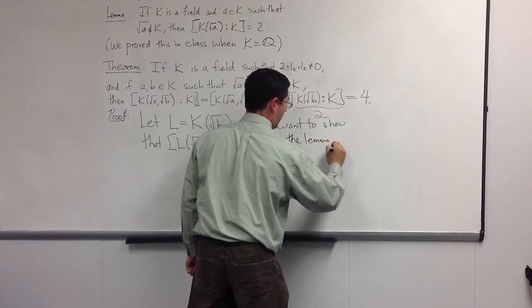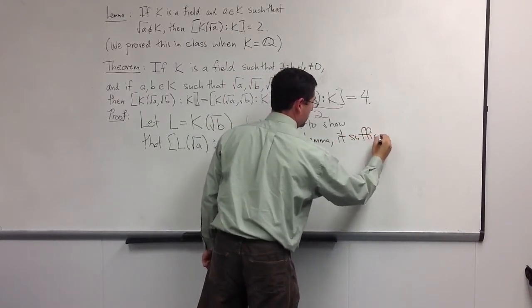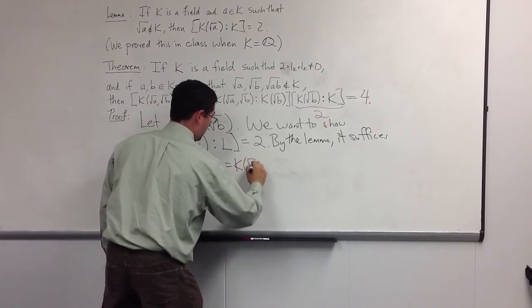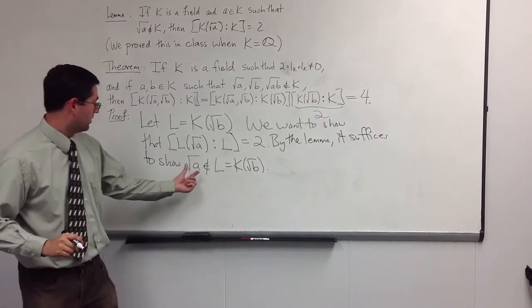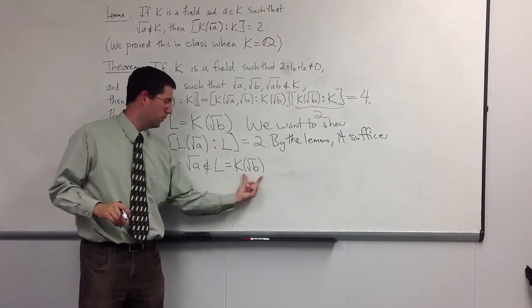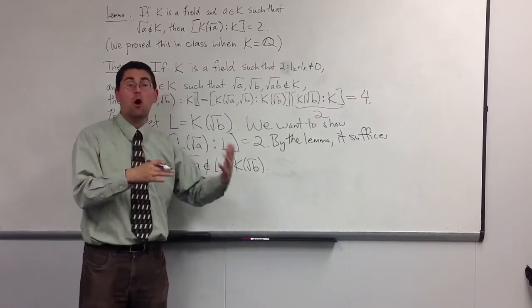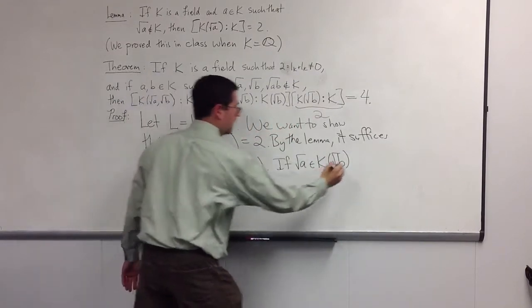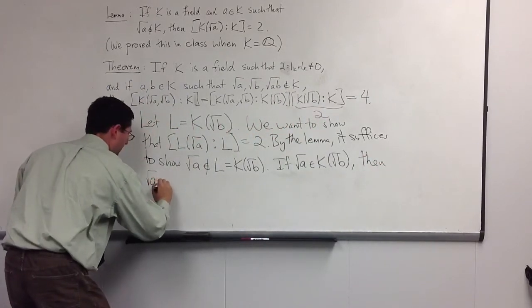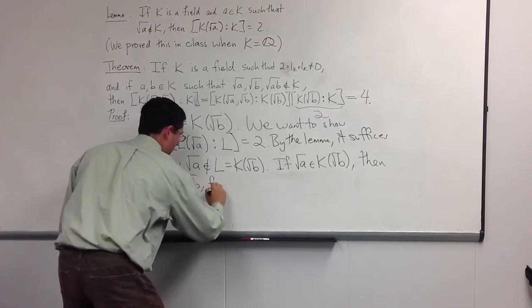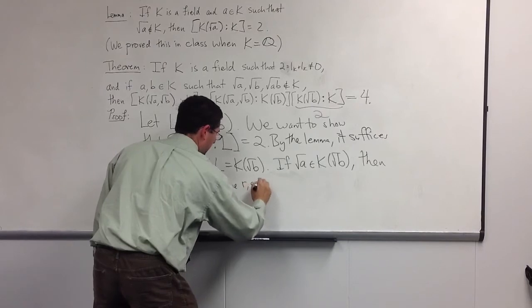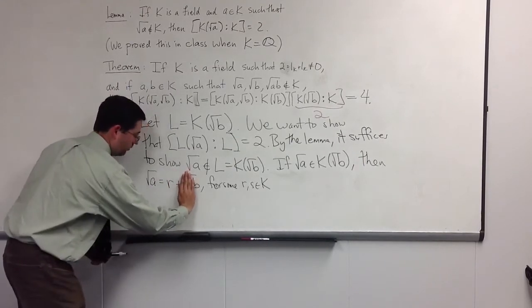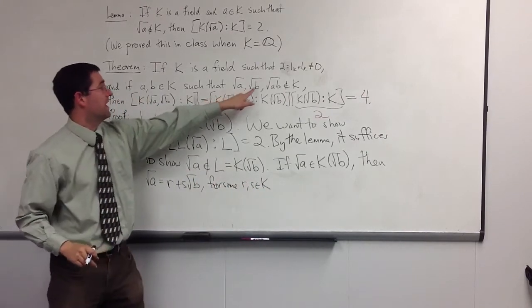To show this, we use proof by contradiction — assume √a is in k(√b). Then we can write √a = r + s√b for some r, s in k. Furthermore, s is not 0, because if s = 0 then √a = r, which is an element of k, contradicting our assumption that √a is not in k.